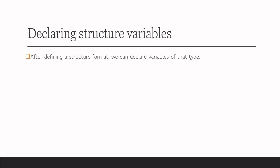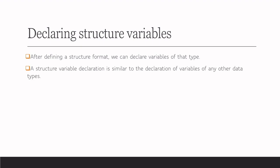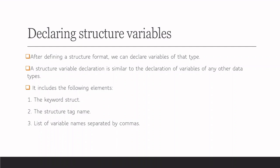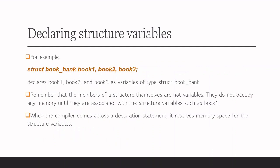Declaring structure variables: after defining a structure format, we can declare the variables of that type, similar to declaration of variables of any other data type. It includes: the keyword struct, then the structure tag name, then the list of variable names separated by commas, then a terminating semicolon. For example, we defined the structure named book_bank and we need three variables for storing details of three books: struct book_bank book1, book2, book3. Here, book1, book2, and book3 are variables of the structure type book_bank.